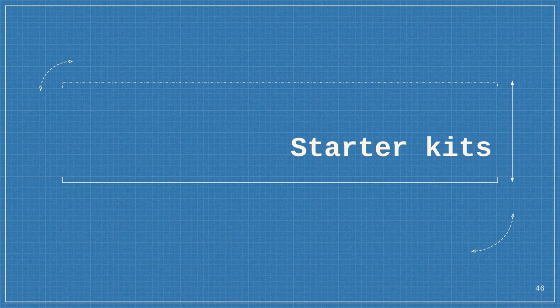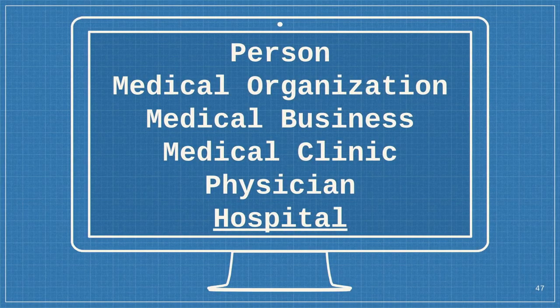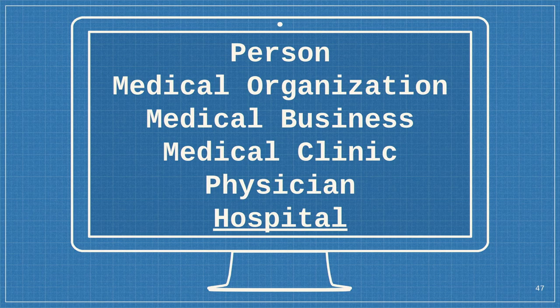I want to talk about starter kits — this is my big finale. It aligns with the recipes initiative. I'm giving people a starting point, generating configuration, and getting sites set up. What you've seen is just content types, but we need views and other adjustments too. I work for a healthcare system, and we contributed a schema.org hospital starter kit. You need a sequence: create people first, then organizations, then businesses, then medical clinics — hospital, medical clinic, and physician are all subtypes of medical business.